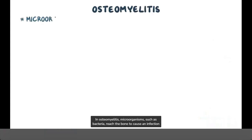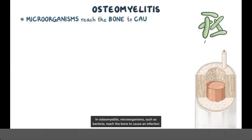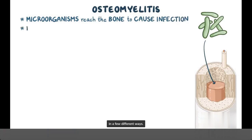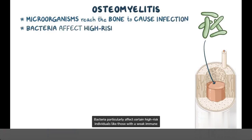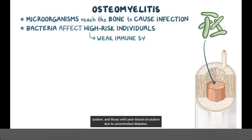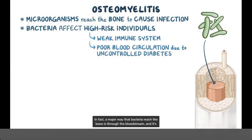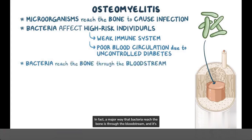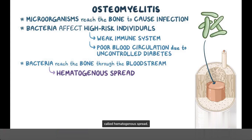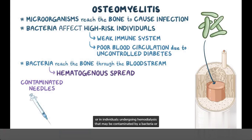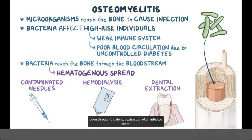In osteomyelitis, microorganisms such as bacteria reach the bone to cause an infection in a few different ways. Bacteria particularly affect certain high-risk individuals, like those with a weak immune system and those with poor blood circulation due to uncontrolled diabetes. A major way that bacteria reach the bone is through the bloodstream, called hematogenous spread. This might happen in a person who uses contaminated needles to inject drugs, in individuals undergoing hemodialysis contaminated by bacteria, or even through the dental extraction of an infected tooth.